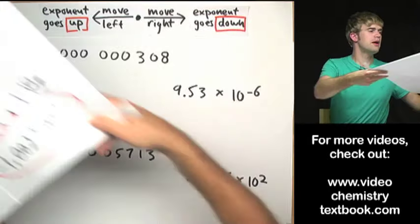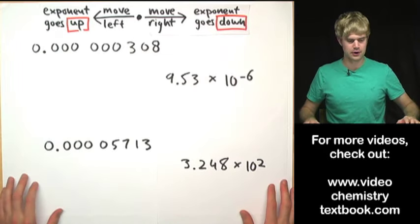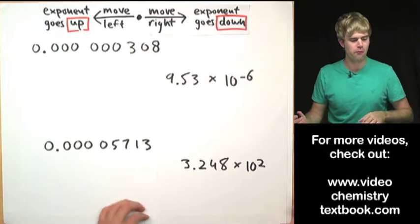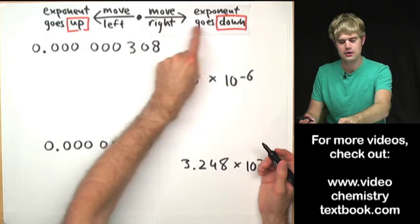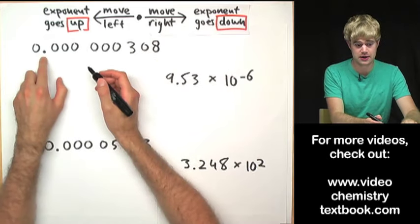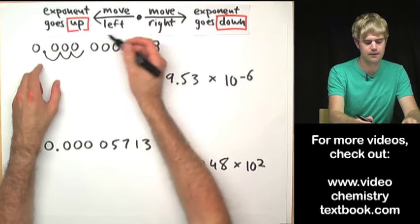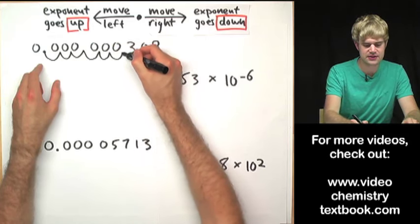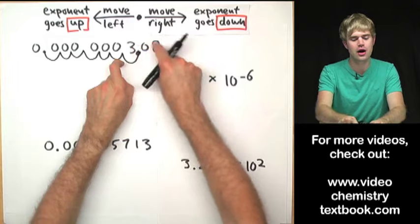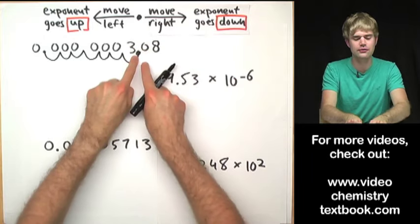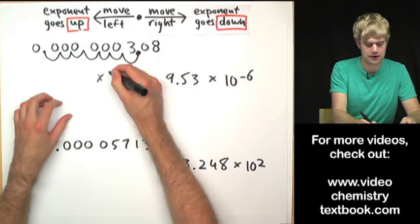Four more examples. Putting this number into scientific notation: moving the decimal to the right so the exponent goes down, starting at 10 to the zero, then negative first, negative second, negative third, negative fourth, negative fifth, negative sixth, negative seventh. There's a zero sandwiched between two non-zero digits so we keep it. The answer is times 10 to the negative seventh.